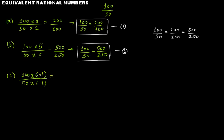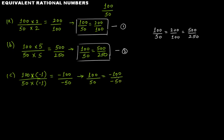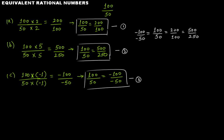Let's multiply 100 over 50 by minus 1. We get minus 100 over minus 50. So we say that 100 over 50 is equal to minus 100 over minus 50; they are equivalent rational numbers because we multiplied both the numerator and denominator by minus 1. Therefore minus 100 over minus 50 is also equal to 200 over 100, since all are equivalent rational numbers.